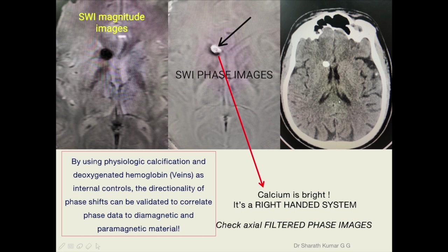We should always check the actual filtered phase images because the phase image must undergo processing, as raw phase images produce artifacts especially in skull base regions. So filtered phase images are to be used.